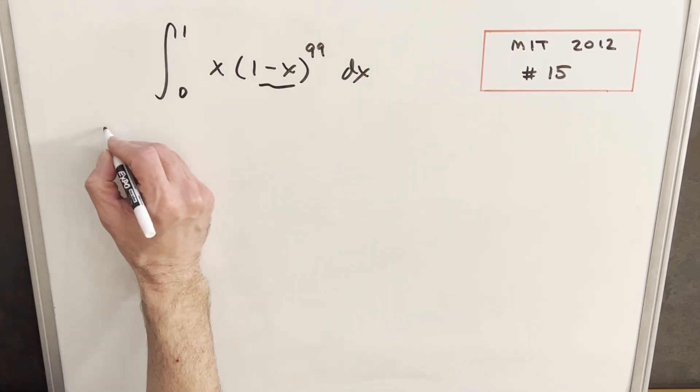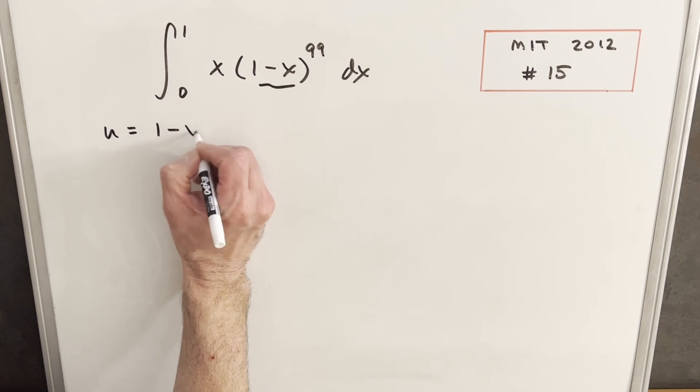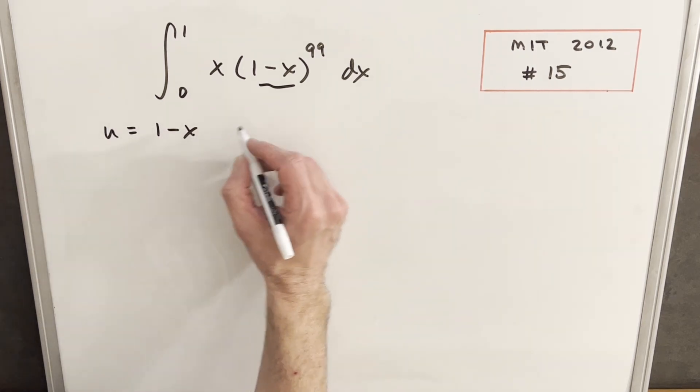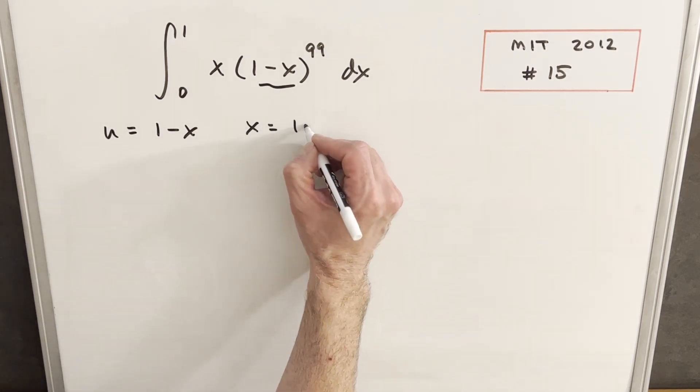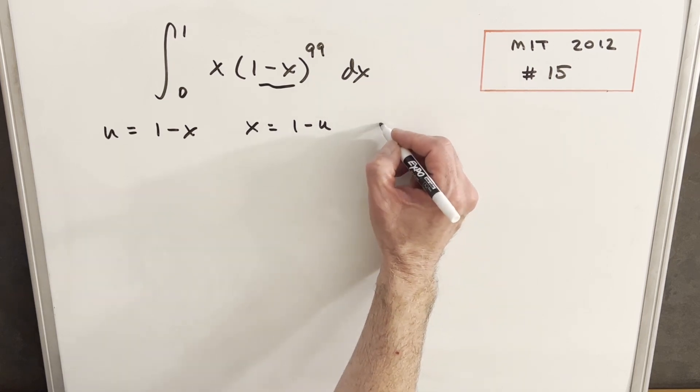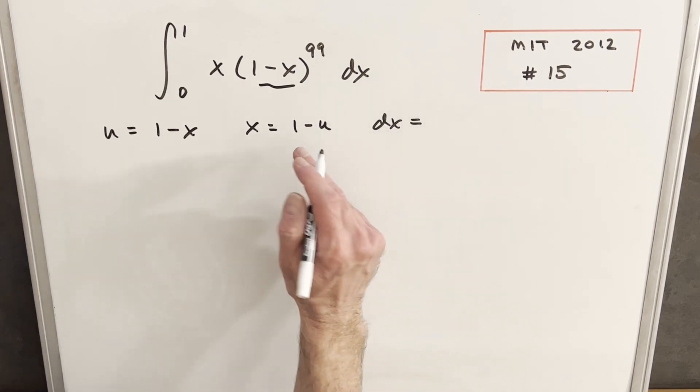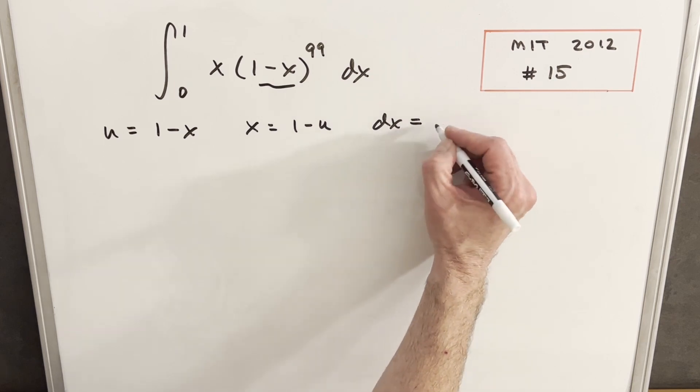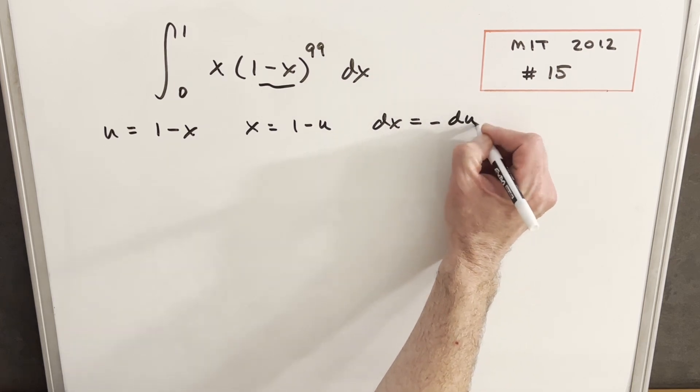I'm just going to make my u into this thing. So we'll say u is 1 minus x. Then with just a little rearranging of this, we see that also x is 1 minus u, and we'll take the derivative to get our dx value. Derivative of 1 is 0. Derivative of minus u is going to be minus du.